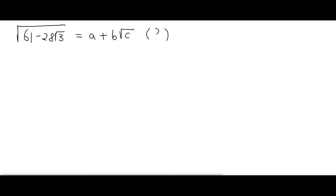I'm going to try to simplify the double radical. You can first write it down this way. I just want to use this expression. Okay, you first take out the radical on the left-hand side. Yes, square both sides. If you square both sides, then the left-hand side becomes 61 minus 28 radical 3.